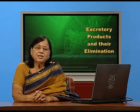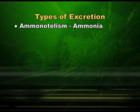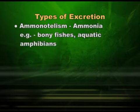Fishes normally give out excretory matter in the form of ammonia, a highly toxic substance. You cannot keep ammonia in your body even for a fraction of a second. In our case, ammonia is not the excretory product, but in fishes it is. Since they live in water, the moment ammonia is produced it is immediately washed off. These animals are called ammonotelic — producing ammonia as excretory matter. Good examples are bony fishes and aquatic amphibians, as ammonia being toxic must be washed off immediately.